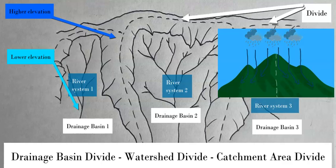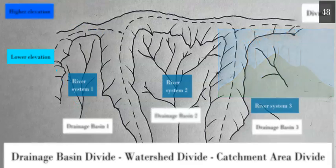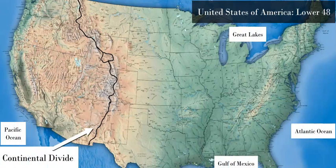When water falls from the atmosphere as any kind of precipitation, it's going to flow a certain way based on this divide. It will flow into one drainage basin or the other based on the elevation, the gradient, and the location of this divide.